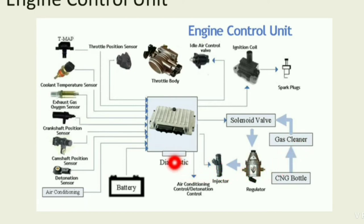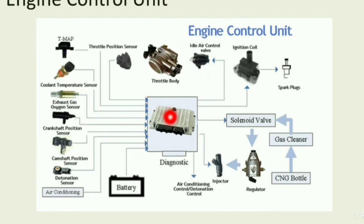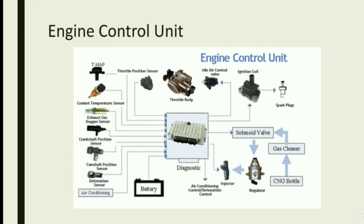Additional components include: gas cleaner, CNG bottle regulator, injector, diagnostics for retrieving information, air conditioning control, battery, detonation sensor, camshaft position sensor, camshaft sensor, exhaust gas oxygen sensor, and coolant temperature sensor. Before ECUs, there were no sensors because the system was completely open loop. The sensor senses information and sends it to the controller — for example, if the temperature becomes too high, the coolant starts to cool the engine.